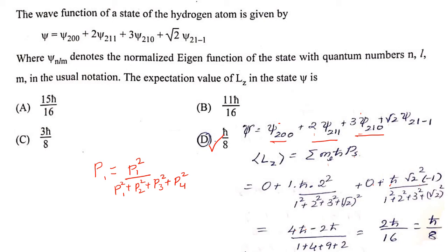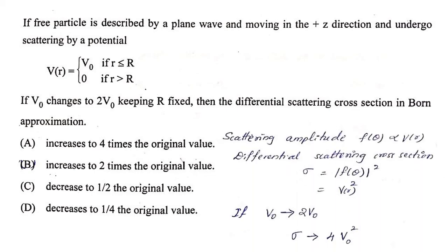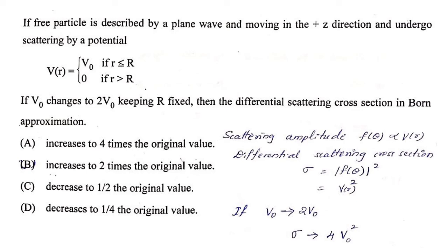Next question: a particle is scattered by the potential V(r) = V₀ for r ≤ R and 0 for r > R. If V₀ changes to 2V₀ keeping R fixed, what happens to the differential scattering cross section in Born approximation? The scattering amplitude f(θ) is directly proportional to V(r). The differential cross section σ = |f(θ)|² ∝ V₀². If V₀ → 2V₀, then σ → 4V₀². Therefore, the cross section increases to 4 times the original value.